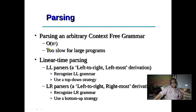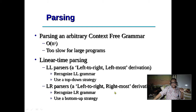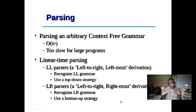O(n³) parsing is not acceptable — too slow. Two linear parser types exist: the LL parser (left to right, leftmost derivation), which corresponds to pre-order tree traversal, and the LR parser (left to right, rightmost derivation), which corresponds to post-order tree traversal. The LR parser is more general and can accommodate more general languages.